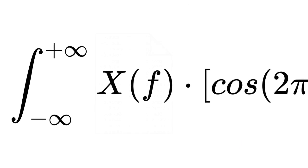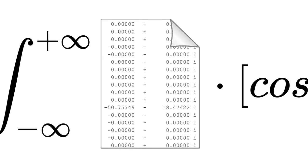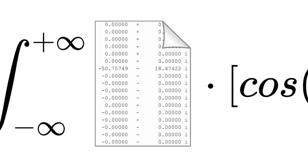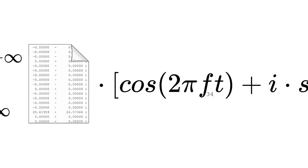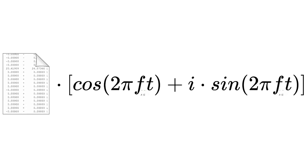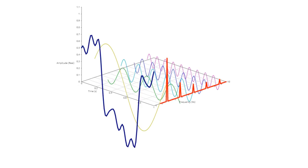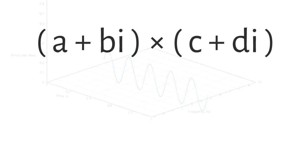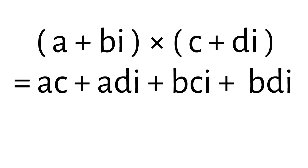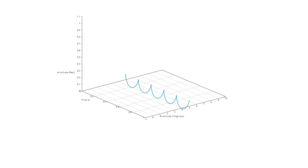Each complex number is multiplied by a cosine and sine wave at the frequency we are currently interested in. But multiplying two complex numbers in this way at a single frequency doesn't recover the two-dimensional sinusoid we saw in the Fourier cube, because the result of the multiplication still contains an imaginary component — it's complex. It looks like a three-dimensional spiral.